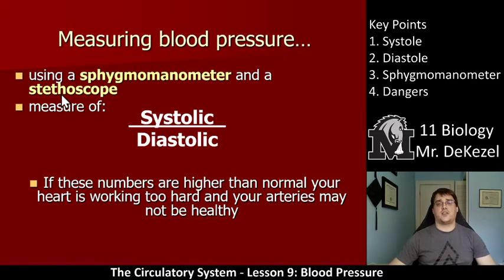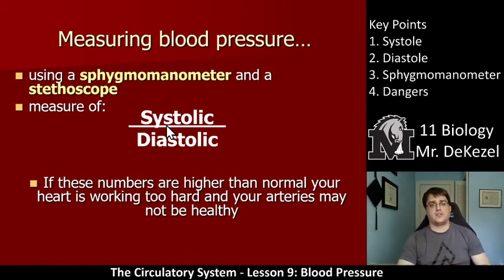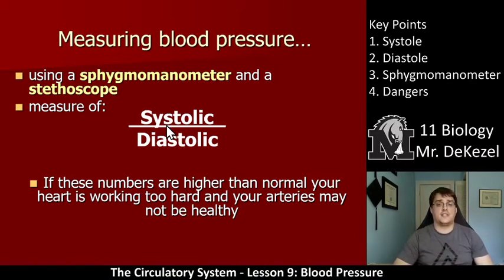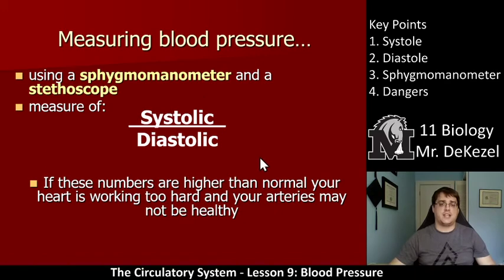To find out what our blood pressure is, we use a sphygmomanometer and a stethoscope. The sphygmomanometer is the cuff that they put around your arm, and then the stethoscope is used so they can listen for the heartbeat. If these numbers are higher than normal, your heart may be working too hard, your arteries may not be healthy, and there may be other problems with your heart or arteries — you may be at risk for a heart attack. Blood pressure is a very large indicator of potential problems.